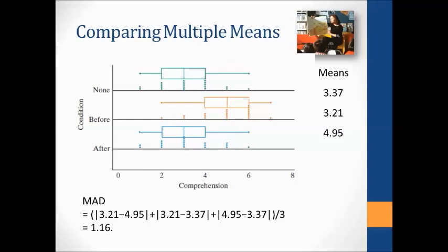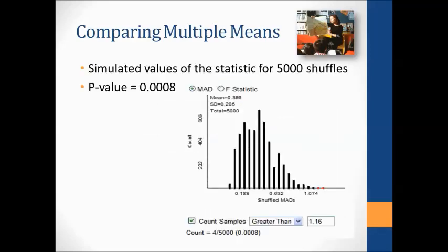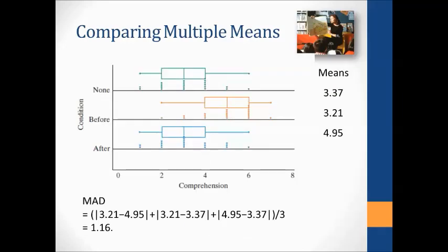The MADS statistic is computed by finding differences between the three means, taking absolute values, adding them up, and dividing by 3 — finding the average distance the three means are from each other. A MADS of zero means all means are the same; the bigger the MADS, the further apart the means are. Here's the null distribution, and our MADS statistic of 1.16 is way out there — giving a tiny p-value. We have significant evidence of a difference. With pairwise confidence intervals, the picture-before group is significantly different from the other two, and those other two are likely not significantly different from each other.